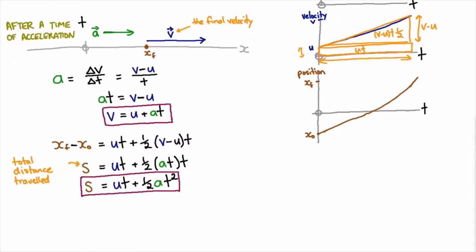That's the second equation we use to describe how things move under constant acceleration. We can see this curve here is quadratic because it goes as time squared.